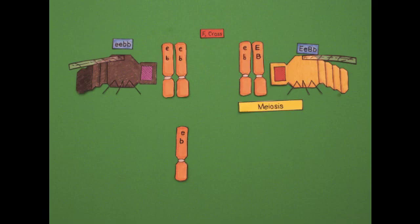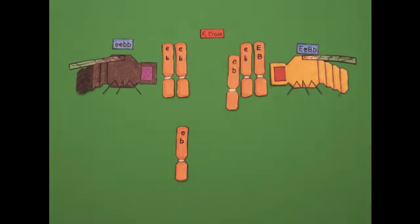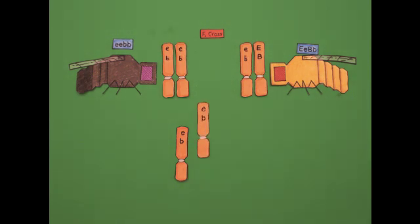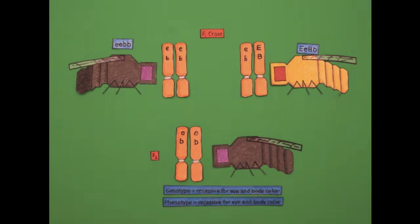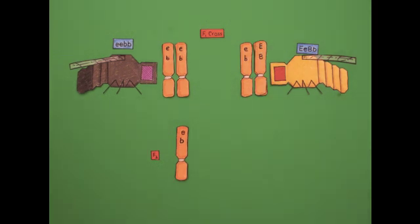If that parent passes along the chromosome with both recessive traits, then the F2 individual produced from that fusion will be genotypically homozygous recessive, phenotypically recessive for both traits, and will resemble one of the original parents. We would call that phenotype parental recessive.